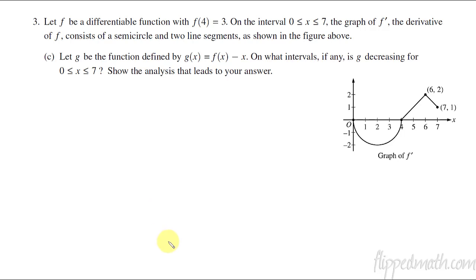Part c, now they introduce a new function. So we've got this function g, and g is going to be defined by f(x) minus x. So on what intervals, if any, is g decreasing for the interval 0 to 7? So let's show the analysis. So how do we know when it's decreasing? A function decreases if its derivative is negative. So let's take a look at g prime of x. G prime of x is just the derivative of these two pieces. So that's going to be f prime minus 1.